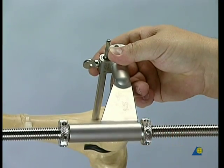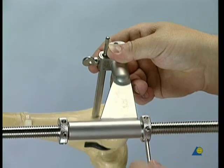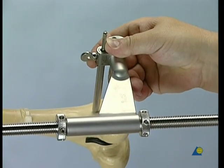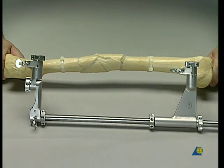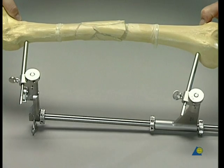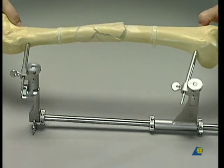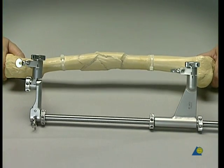The sliding carriage is secured with the third knurled nut. In optimal application, the distractor will be parallel to the longitudinal axis of the femur in both planes. The aim of the fracture reduction is the correct alignment of the main fragments and the correction of the length and rotation of the femur.